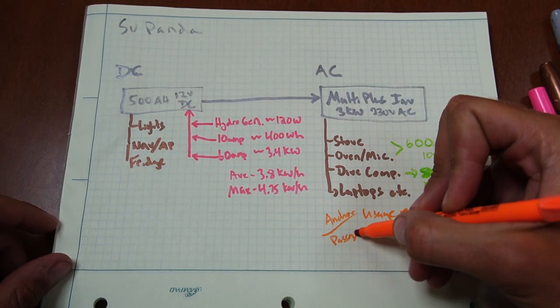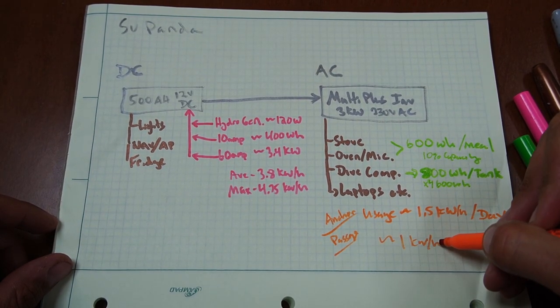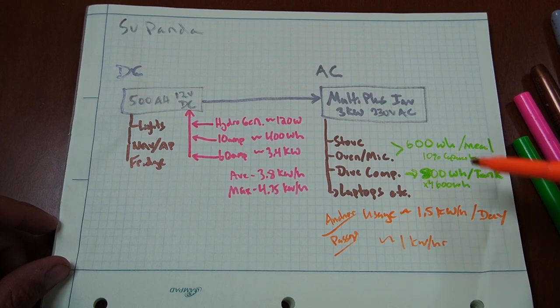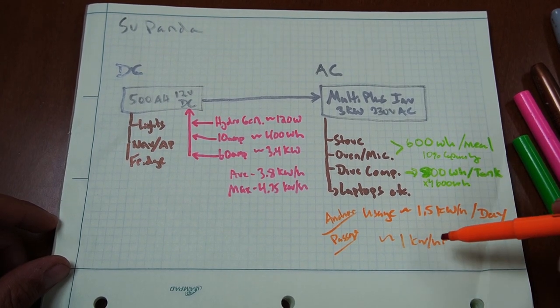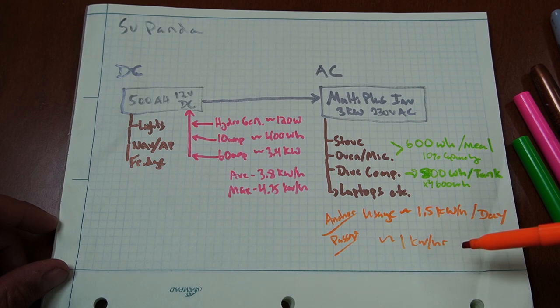Under passage, we use even less. Maybe one kilowatt hour. And that's simply because we're not cooking. So we don't have large cooking loads. And when we're under passage, we only have our navigation and our autopilot. Our autopilot's going to be the biggest draw as that system is electronic.